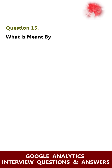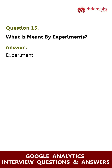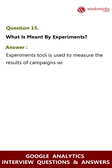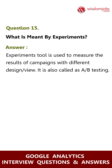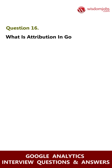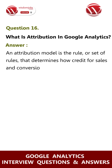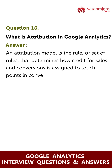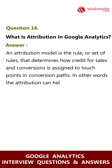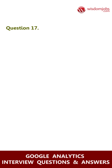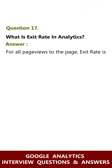Question 15: What is meant by experiments? Answer: The experiments tool is used to measure the results of campaigns with different design views. It is also called A/B testing. Question 16: What is attribution in Google Analytics? Answer: An attribution model is the rule or set of rules that determines how credit for sales and conversions is assigned to touch points in conversion paths. In other words, attribution helps us to know the proper touch points in the funnel.